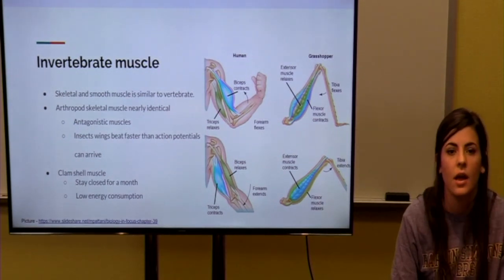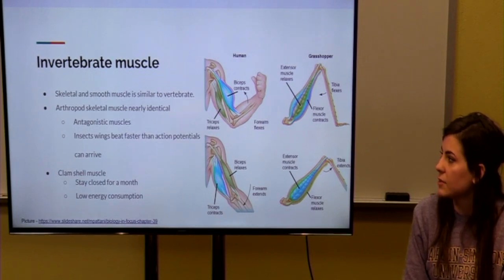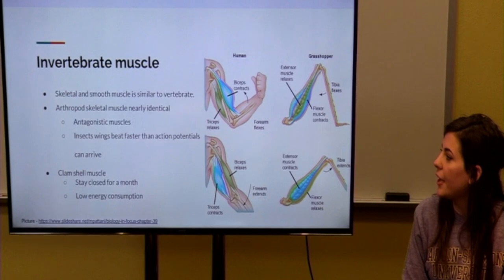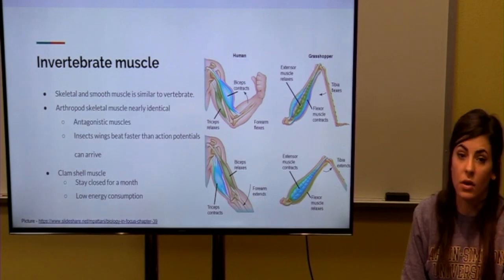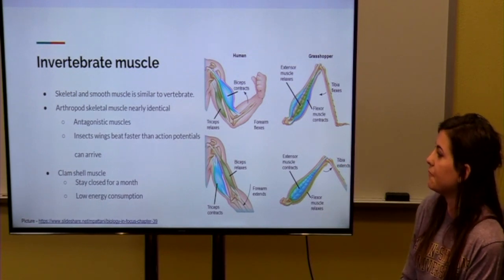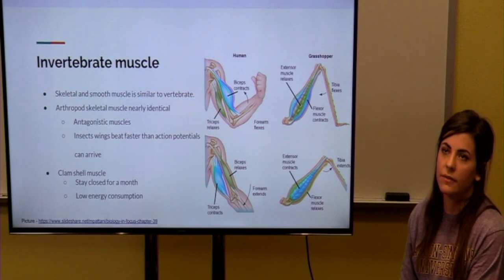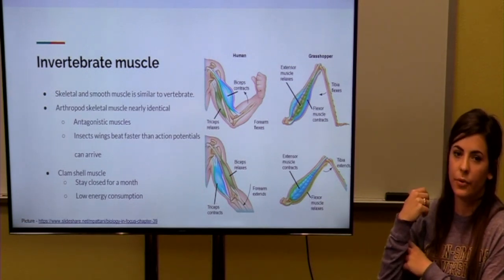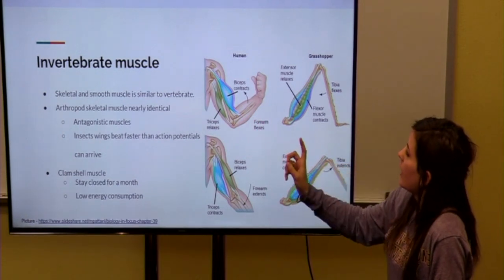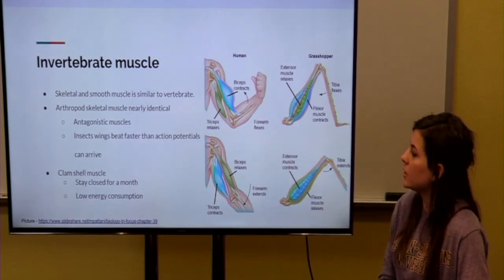Now I'm going to talk to you about muscles in invertebrates. So, skeletal and smooth muscle is pretty similar to how our muscle works. In arthropod skeletal muscle, it's almost identical. As you can see here is an example of antagonistic muscles. And this is when you, whenever you flex your bicep for example, your tricep relaxes as shown here. And it also, or grasshoppers also have the same function in their legs.